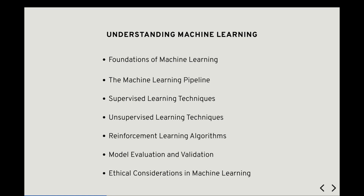The Machine Learning Pipeline. Building a machine learning model involves several steps, collectively known as the machine learning pipeline. We explore each stage of the pipeline, from data collection and preprocessing to model training, evaluation, and deployment. Along the way, we discuss best practices, common pitfalls, and techniques for optimizing model performance.